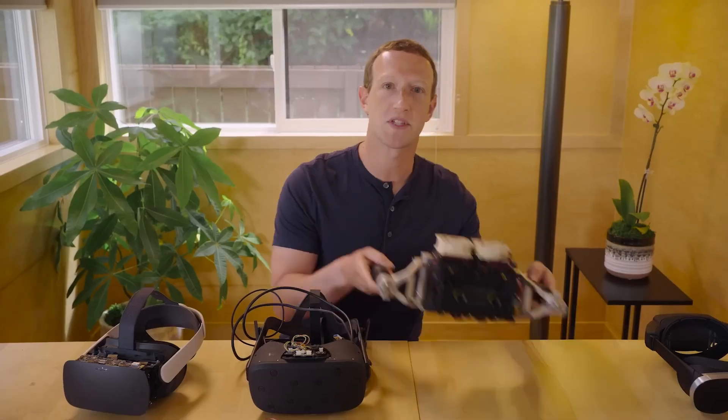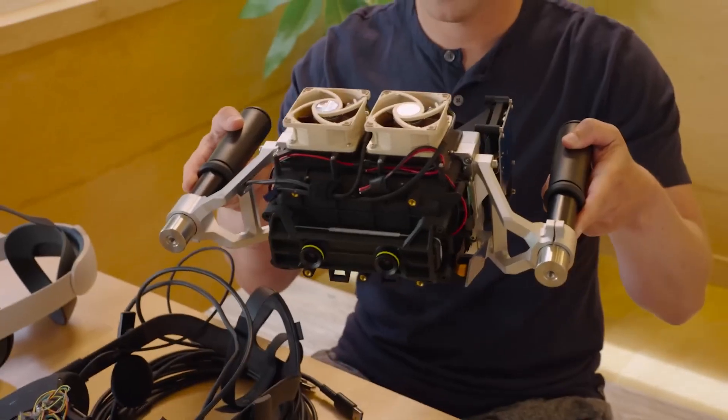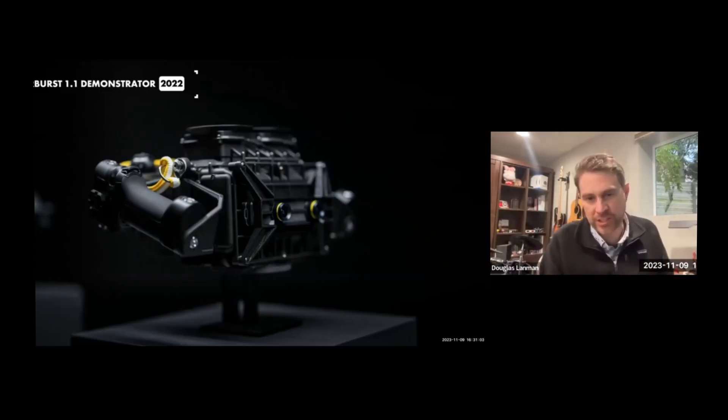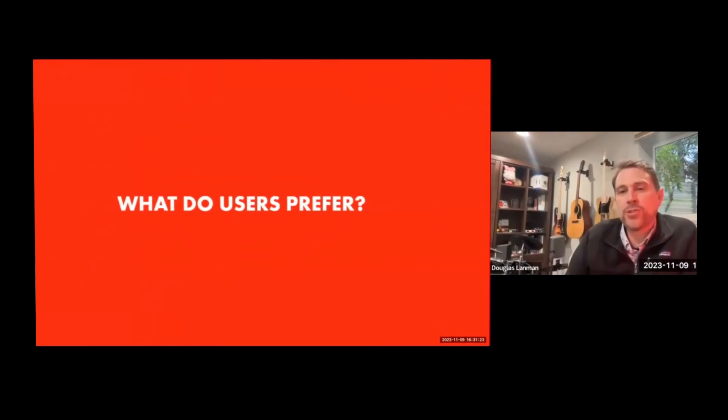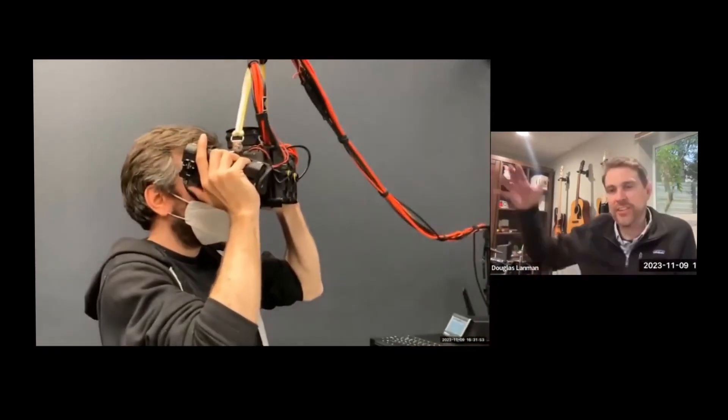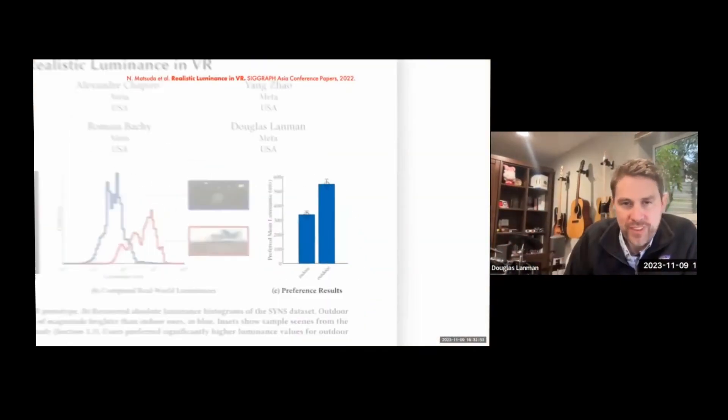Current VR displays output roughly 100 nits. And for comparison, your TV is roughly 400. The brightness inside your headset is at the lower end of the spectrum, but it is something we've gotten used to. But that's what makes this prototype super impressive. The Starburst outputs 20,000 nits and is a true HDR display. It really takes it to the extreme when it comes to displays.